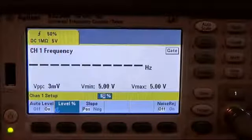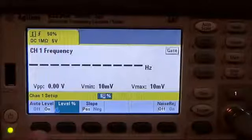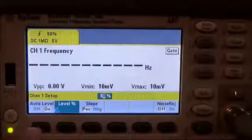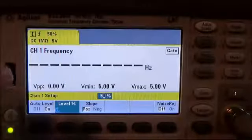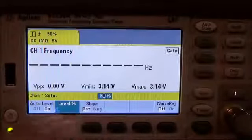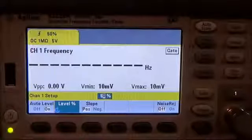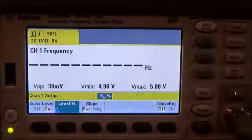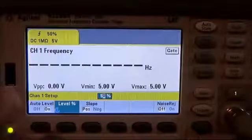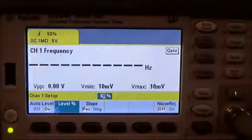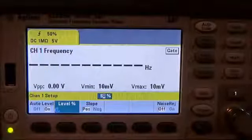What auto leveling does is it's kind of like auto range on a meter. It pre-samples the input to determine the min and the max and then sets the trigger level to the 50 percent point. So as you can imagine, a signal that is slow and changing may miss where to set that trigger level.